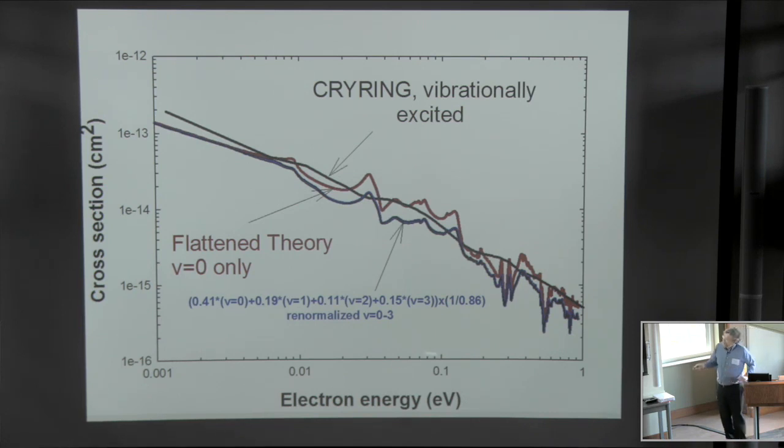And they had roughly 41% of the ions in v=0, 19% in v=1, 11% in v=2, and 15% in v=3. Surprisingly, they didn't see any v=4.